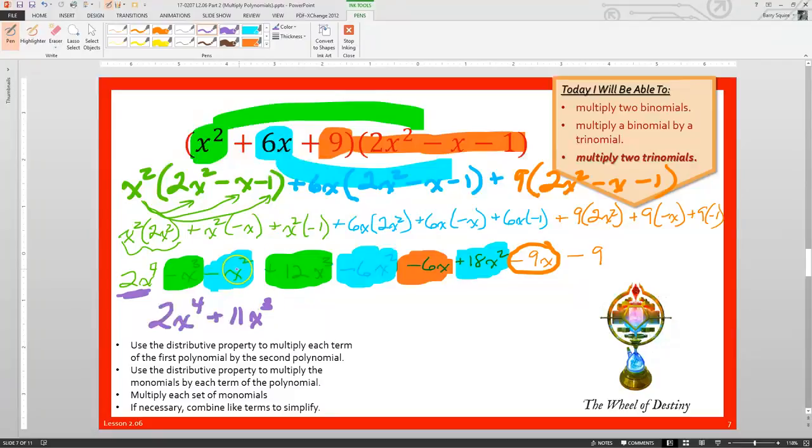Now our second degree terms, there's three of those. Negative 1 minus 6, so that's going to be negative 7, plus 18, so that's going to be 11x squared. Let's see, make sure we get these all. Got the green ones, got the blue ones.